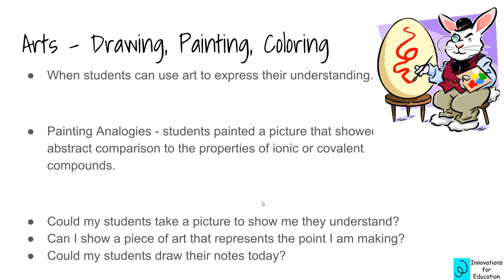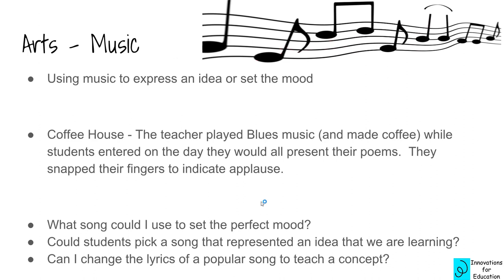The music hook is to use music to express an idea or set the mood. The example was the coffee house: the teacher played blues music, made some coffee, and turned down the lights while students entered on the day they presented their poems. He had kids snap their fingers to indicate applause — a quiet, respectful way to show appreciation. Ask yourself: is there a song to set the mood? Could students pick a song that represented an idea? Could you change the lyrics of a song to teach a concept?